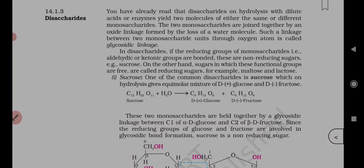In disaccharides, if the reducing groups of monosaccharides — that is the aldehydic group or ketonic group — are bonded, they are non-reducing sugars; for example, sucrose. On the other hand, sugars in which these functional groups are free are called reducing sugars; for example, maltose and lactose.